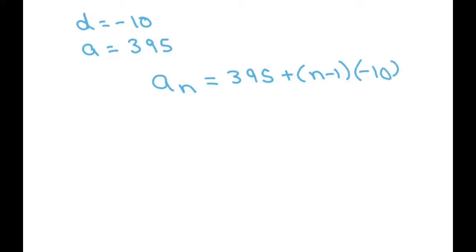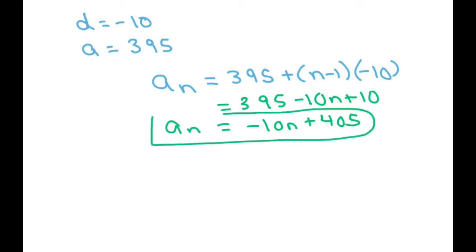And then you merely clean this up and simplify. So basically you get negative 10n, and you add 10 to this, you get 405. So that's your explicit term or formula.